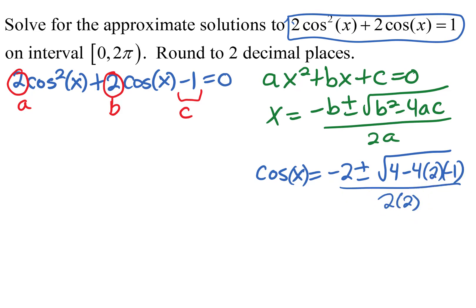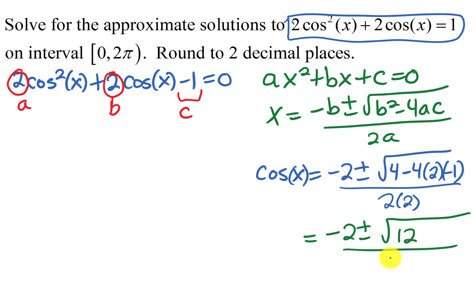Simplifying inside the square root: 4 minus 4 times 2 times negative 1 gives us 4 plus 8, which is 12. So we have negative 2 plus or minus the square root of 12, all over 4. The square root of 12 simplifies: 12 is 4 times 3, so the square root of 4 comes out as 2, leaving square root of 3 underneath.